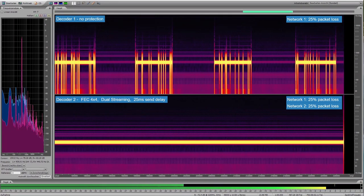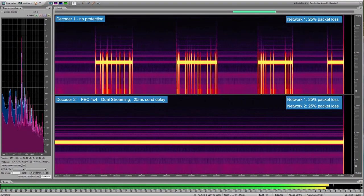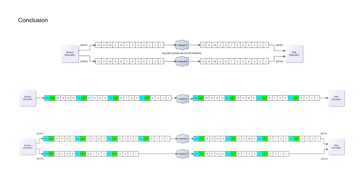This concludes the demonstration. Whether you are having issues with your contribution network right now or want to avoid them in the future, dual streaming, FEC, or a combination of both are available at your disposal. If you are uncertain which method is right for you, contact us and we will help you choose. Thank you for your time and I hope I was able to assist you in your current or future endeavors.